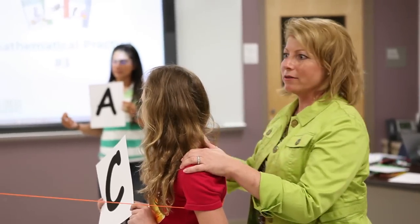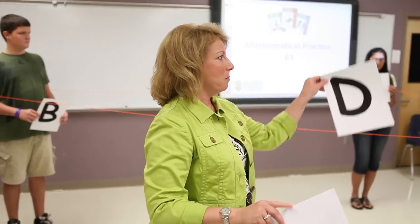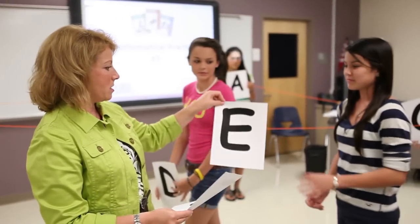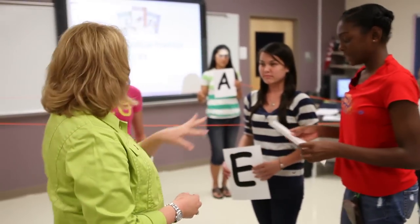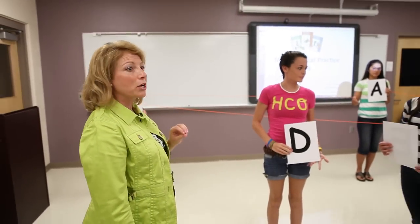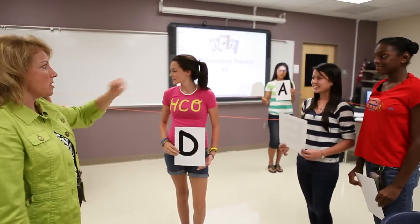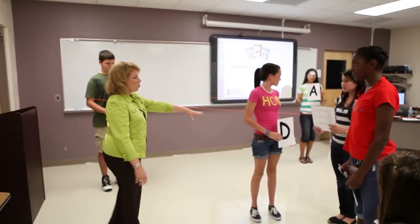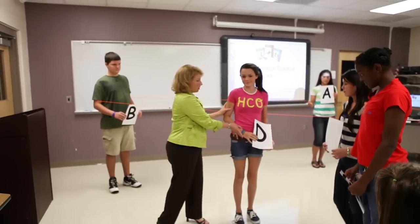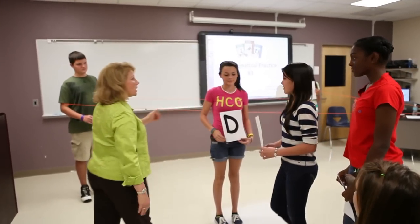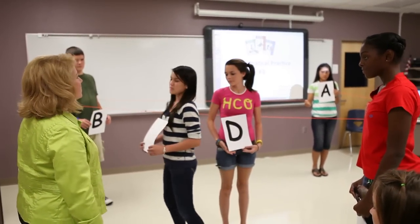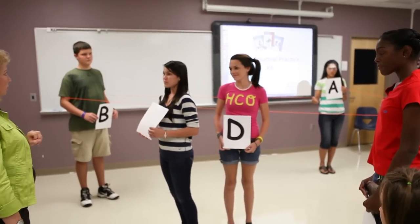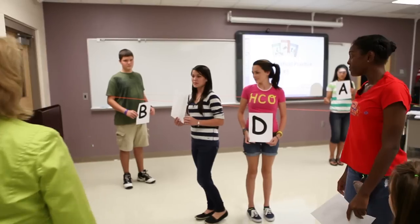I'd like three more volunteers. Let me have Madison, Kayla, and Michaela. You will be points D, E, and F, and I'd like the three of you to construct another right triangle similar to triangle ABC. Point D, stand right here, and I want DE to be parallel to the wall and similar to AB — walk out that many spaces to be similar.